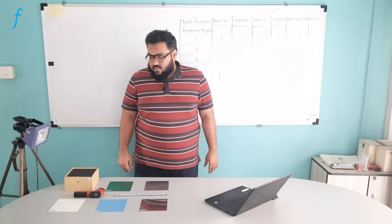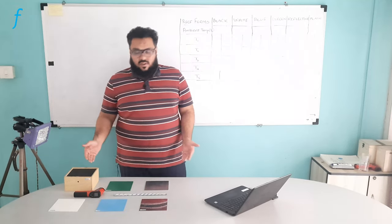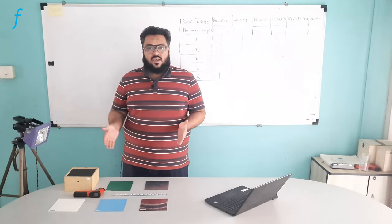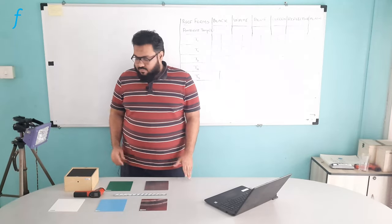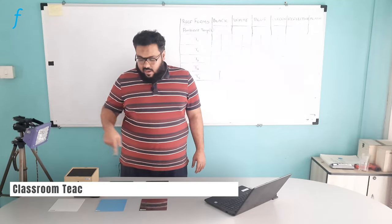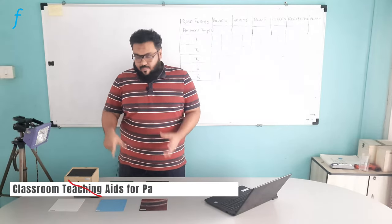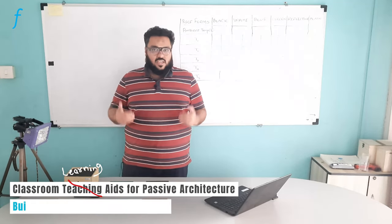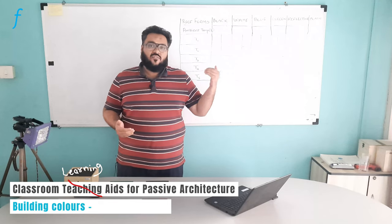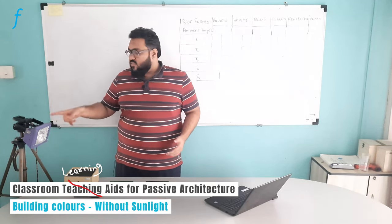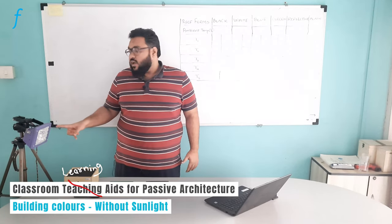Hi, the experiment that we have here is the heat transfer study of building colors. Here you can see we have different building colors, and we have a few things that we will require to perform this experiment. If we don't have exposure to sunlight, we have a halogen tube here that will simulate the sun or the heat of the sun.